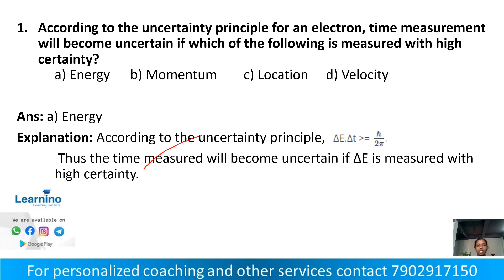The uncertainty principle states that delta E times delta T is greater than h by 2 pi. So if time measurement becomes uncertain, then delta E — energy — will be measured with high certainty. The answer is Option A: energy.